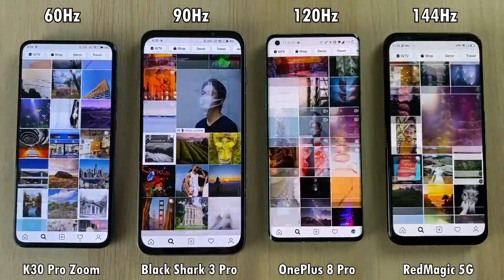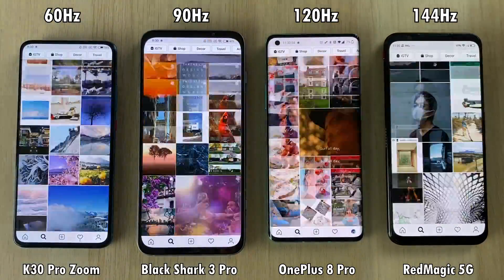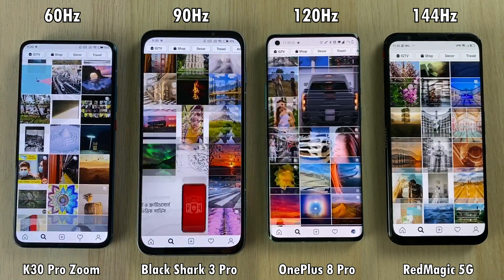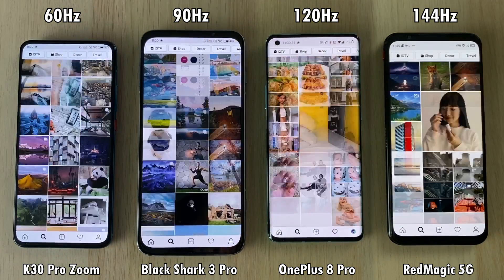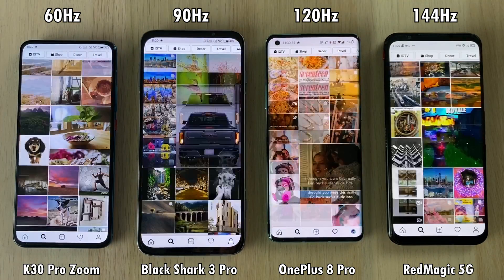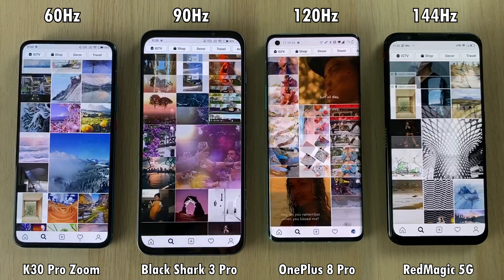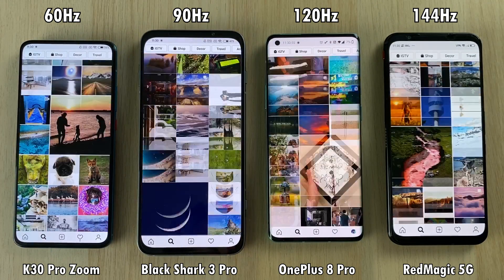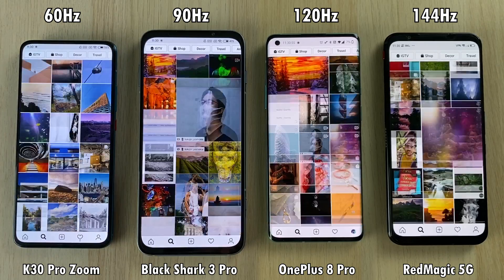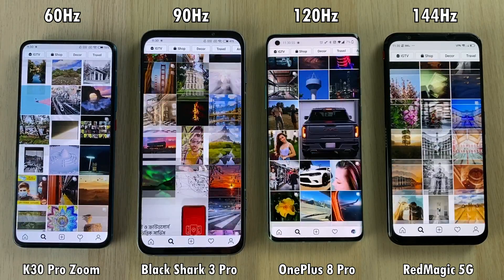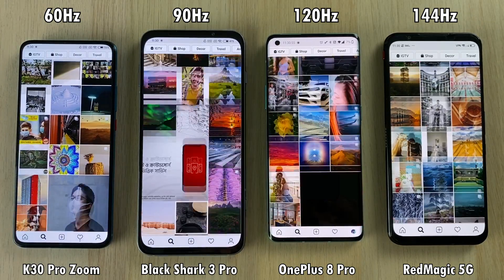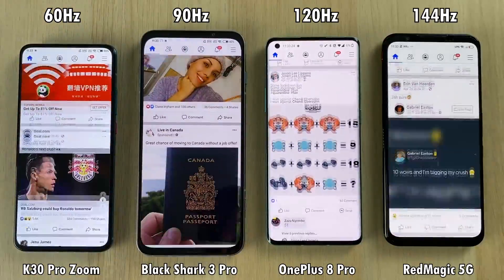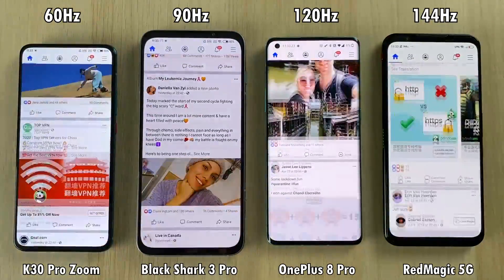Scrolling through Instagram — since most of you do that — we're going to slow the clip down a lot now: 75% and then 90%, so it's running at just 10% of real time. You can see that the Red Magic 5G on the right-hand side is showing a lot more frames per second as opposed to the other three devices, but the difference between 120 and 144 isn't such a big gap. It is much bigger between the 60 and 90Hz panels on the left-hand side.